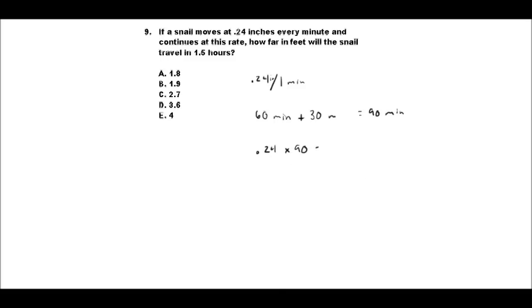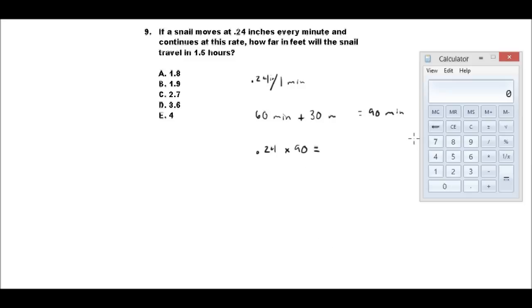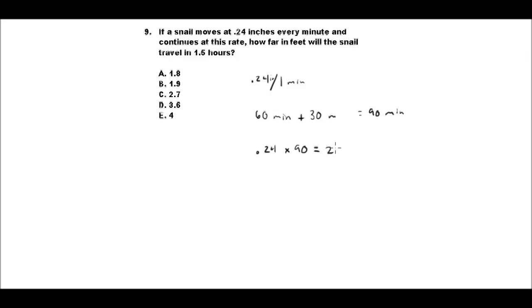I'm going to grab a calculator here and we'll see what that equals. So 90 times .24 equals 21.6.